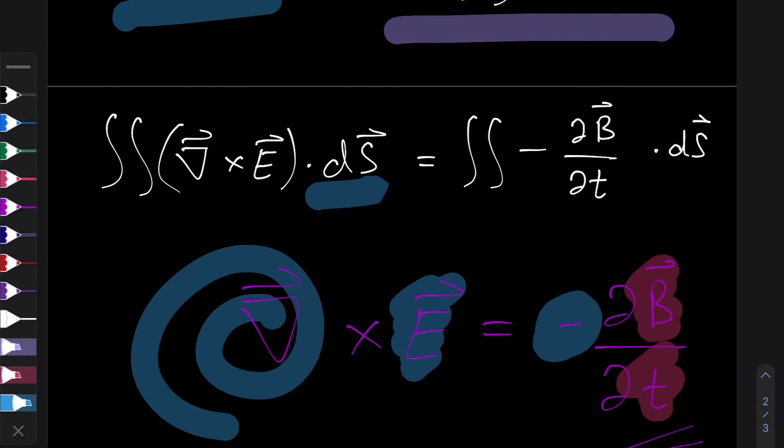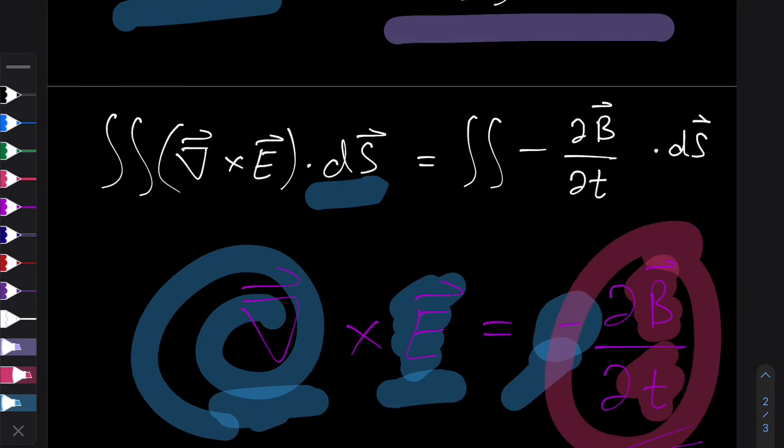So this relates how a changing magnetic field sort of induces an electric field circulating around it. And it's all there in the maths, the curl operator talks about the circulation, this is the electric field itself. The negative sign over here refers to how it's in the opposite direction to this vector here. And all of Faraday's law gets encapsulated into this one line of vector calculus.